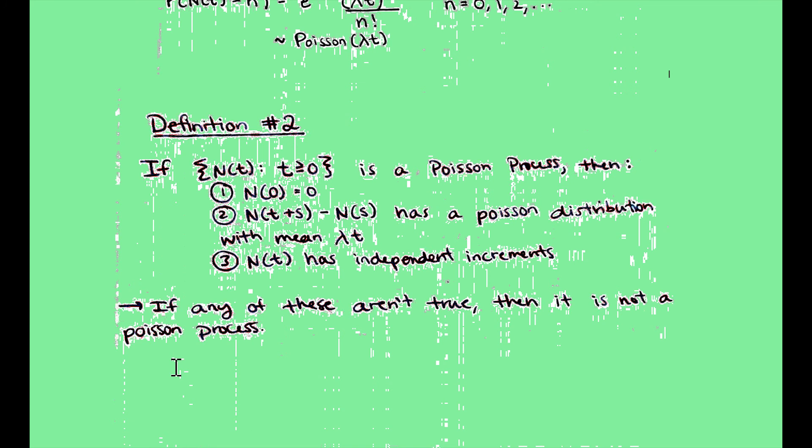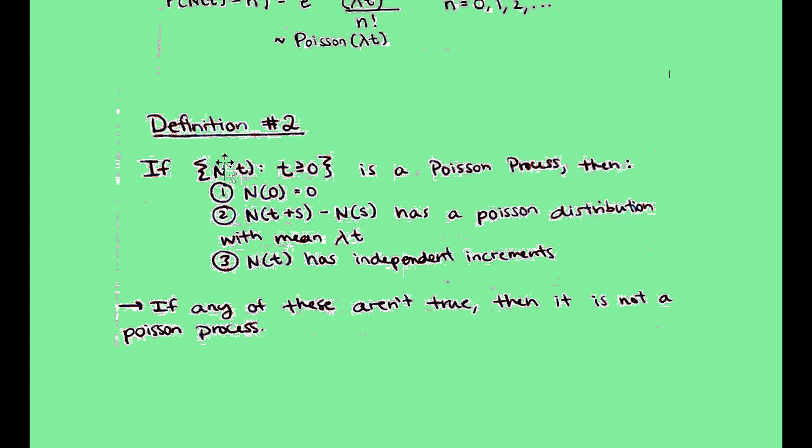So here's definition 2. So let's say we have a stochastic process with N(t) such that t is greater than or equal to 0. Then we know it's a Poisson process if, first of all, N(0) is equal to 0, which makes sense because at time 0, no events have happened.